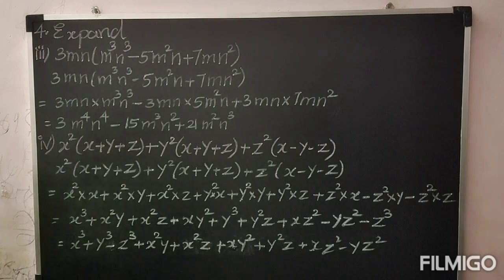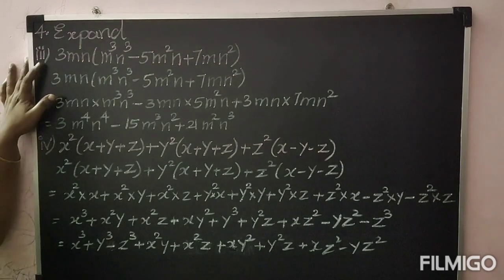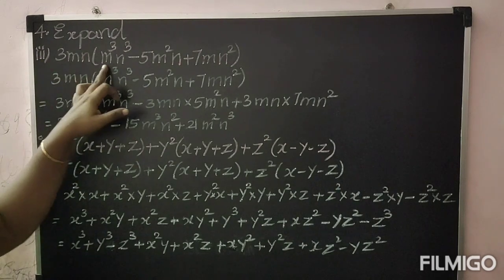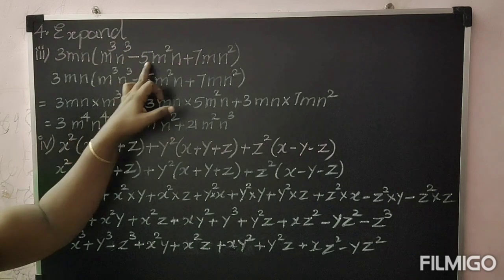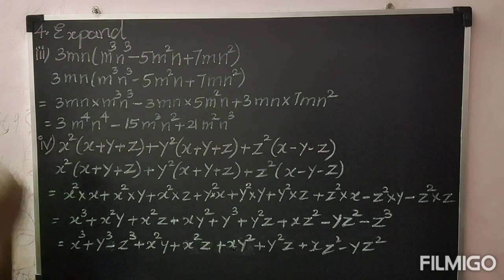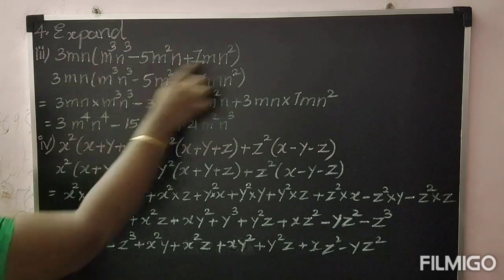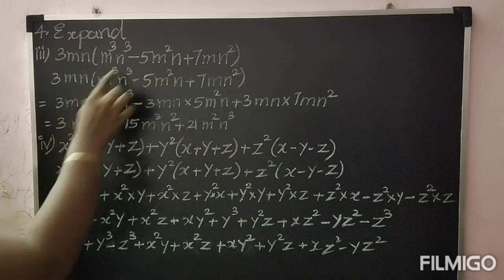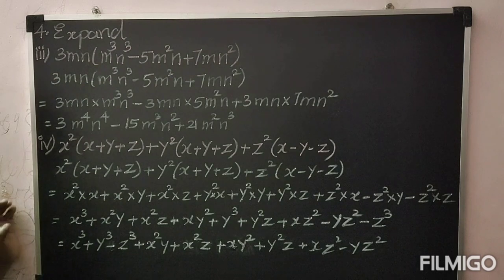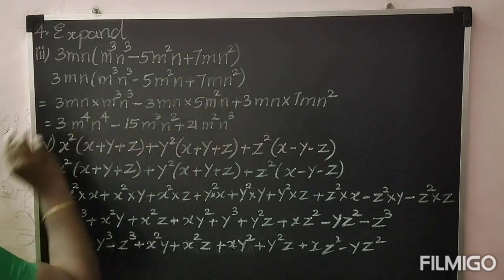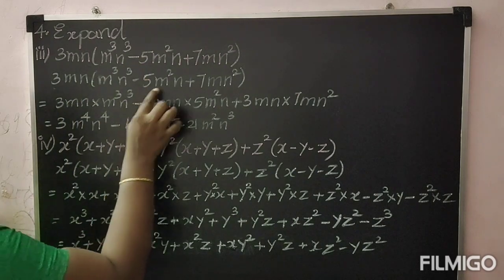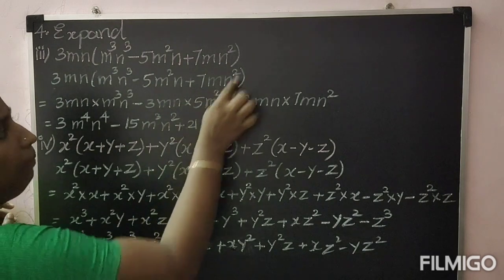Next, we are going to see the third example: expand 3mn into (m³n³ − 5m²n + 7mn²). So we are going to multiply monomial by trinomial — here you have three terms, this is called a trinomial; only one term outside, that is a monomial. Write the question as it is: 3mn into (m³n³ − 5m²n + 7mn²).